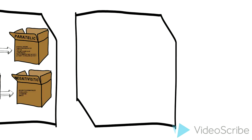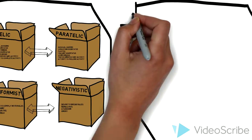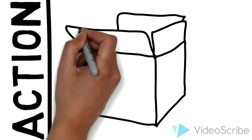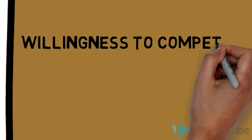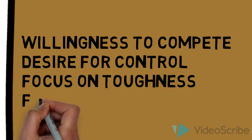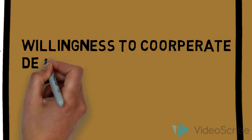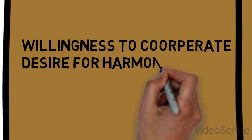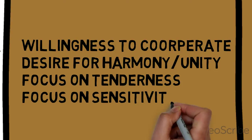Moving on to the transactional metamotivational states. The state of mastery involves a willingness to compete, desire for control, and a focus on strength and toughness. Whereas its pair, sympathy, is a willingness to cooperate, a desire for harmony and unity, with a focus on tenderness and sensitivity.